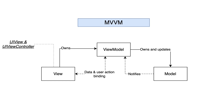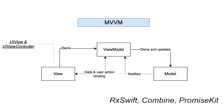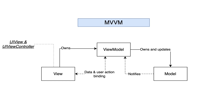But how do we implement this binding? There are multiple approaches. We can create a simple implementation based on the observer pattern ourselves, or leverage existing libraries. One option is to use KVO-based binding libraries like SwiftBond. Alternatively, we can embrace full-scale reactive programming solutions such as RxSwift, Combine, or PromiseKit. Nowadays the most popular MVVM implementation revolves around reactive frameworks like RxSwift.